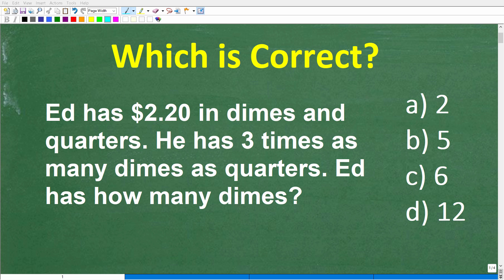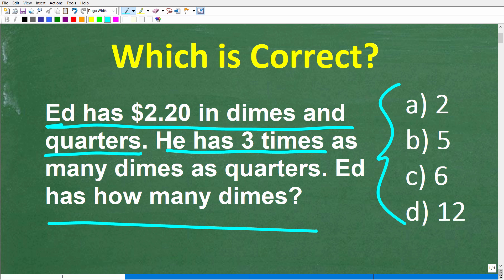Okay, so let's test your ability to solve a money math word problem. This is the problem: Ed has $2.20 in dimes and quarters. He has three times as many dimes as quarters. Ed has how many dimes?